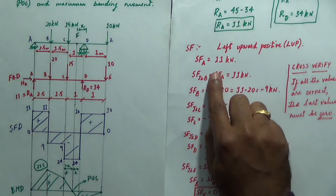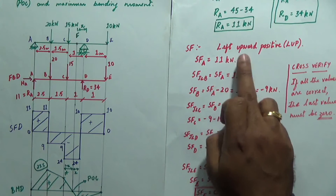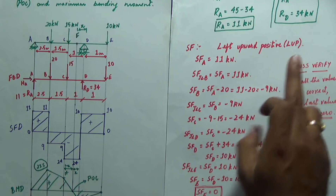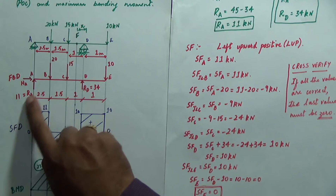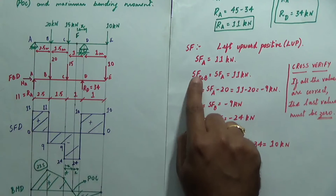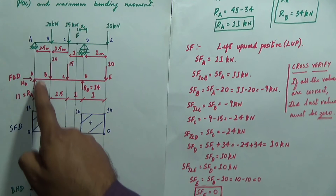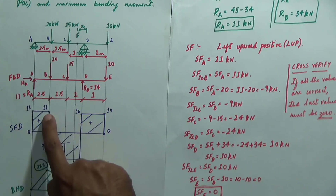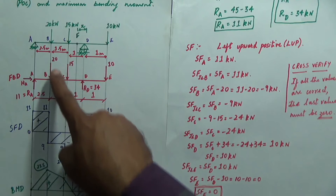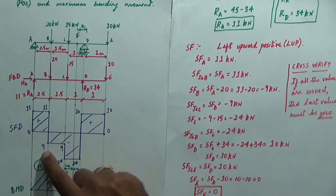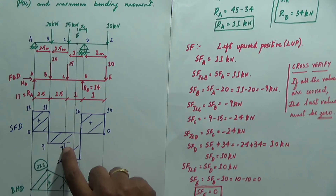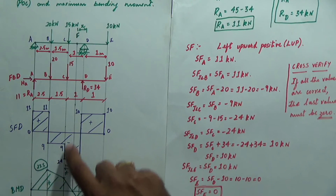Next, draw the shear force diagram. The sign convention for shear force is left upward positive — referred to as LUP. Shear force at A = 11 kN (upward reaction). Shear force just left of B is also 11 kN. Shear force at B = 11 − 20 = −9 kN. You can cross-verify: shear force just left of C is −9 kN.